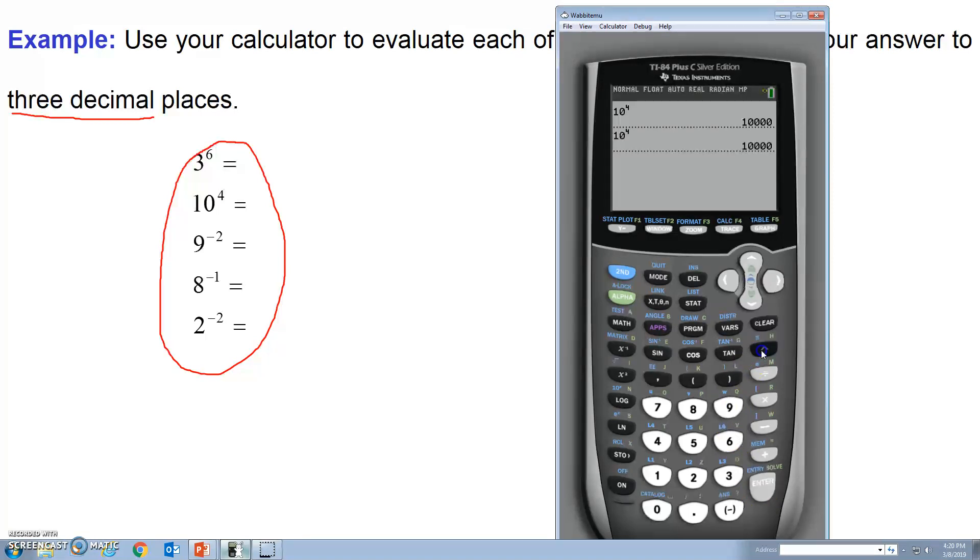Nine to the power of minus two. This is important. This is the subtraction button, but this is the minus button. So you want to make sure you hit the minus button and not the subtraction button. And then enter. And there it is. And three decimal places. So this would be point zero, one, two. And that would be all that I would write.